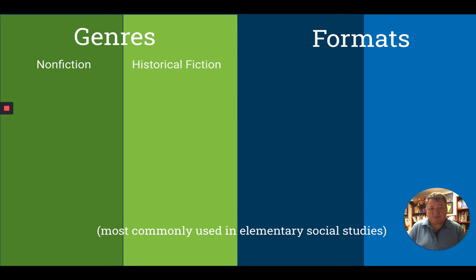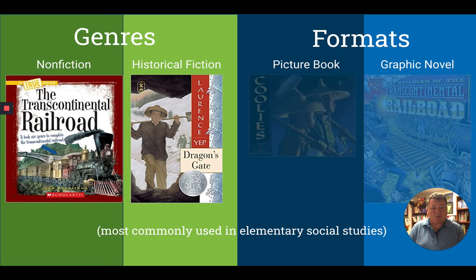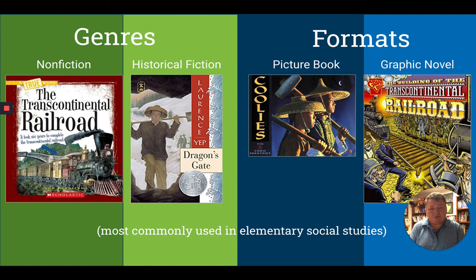Books might fit these categories around the same topic. Take the Transcontinental Railroad — here is a non-fiction book, not a picture book or graphic novel. Here is a novel in historical fiction. Here is a picture book called Coolies, which fits the historical fiction category. And here is a graphic novel, like a comic book, also historical fiction based on true events, though not all of it is true.